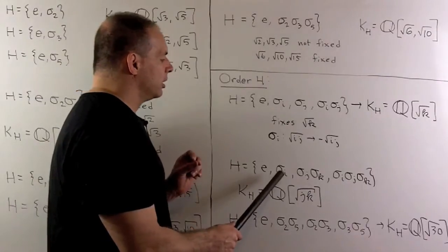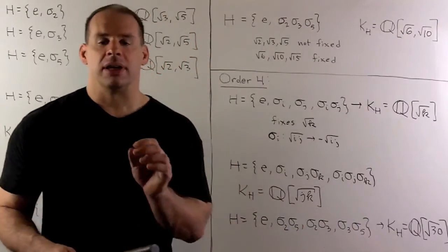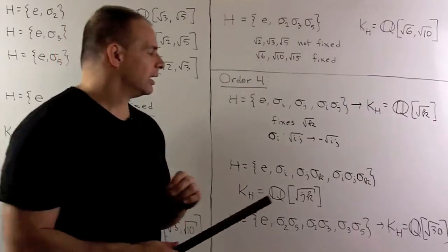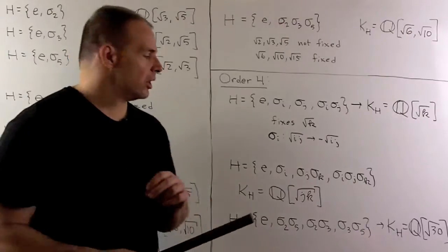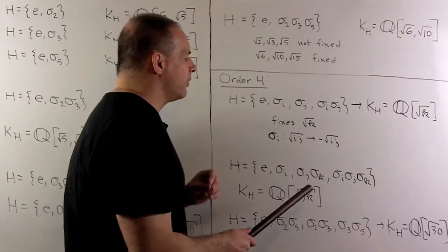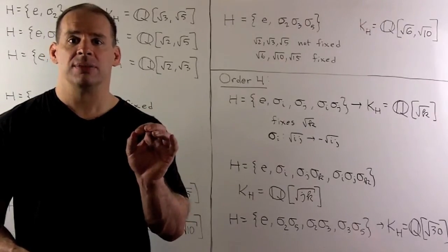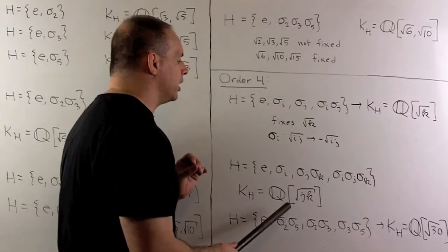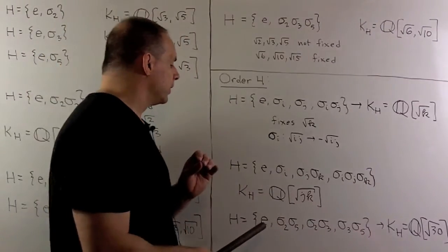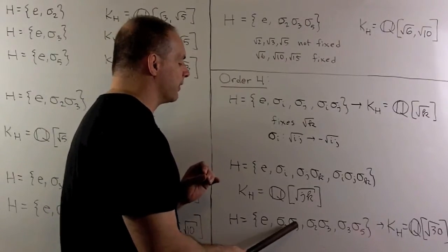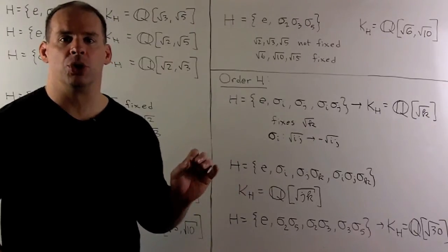In Case 2, the subgroup has generators σᵢ and σⱼσₖ, plus their product σᵢσⱼσₖ. σᵢ fixes √(jk); σⱼσₖ sends √j and √k to their negatives, but their product √(jk) is fixed; and σᵢσⱼσₖ also fixes √(jk). Checking the basis, no other elements are fixed, so the fixed field is Q(√(jk)). This gives another three fixed fields. Finally, for the subgroup {e, σ₂σ₅, σ₂σ₃, σ₃σ₅}, the fixed field is Q(√30).